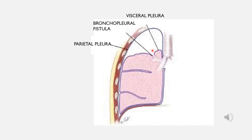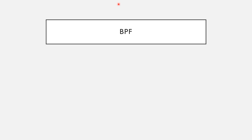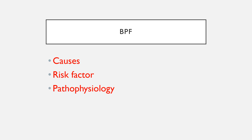Bronchopleural fistula is a sinus tract found between the bronchus and the pleural space, with a mortality ranging between 25 to 71%. Welcome to my channel Lung Master. In this video, Part 1, we will be discussing bronchopleural fistula in detail regarding its causes, risk factors, pathophysiology, and epidemiology.